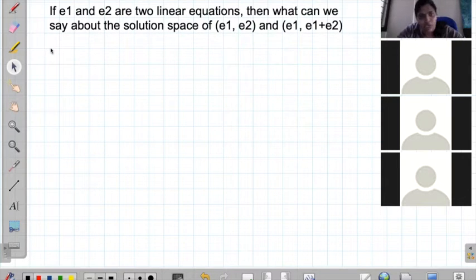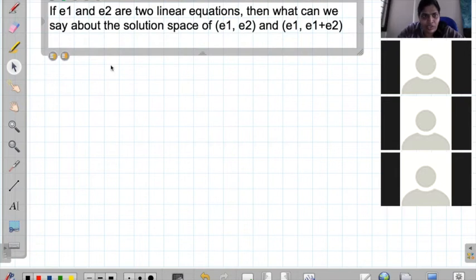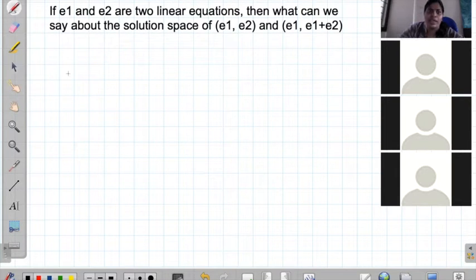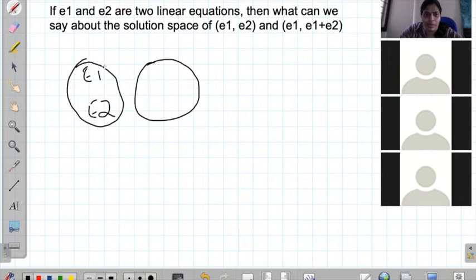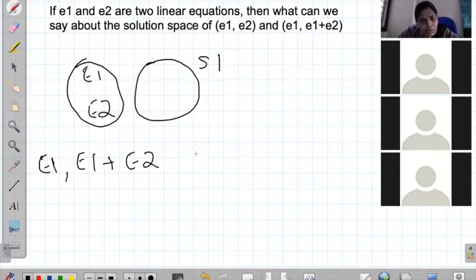So she's not here and we are going to continue looking at this question we were discussing last week. If e1 and e2 are two linear equations and this is a solution space for this system, then when we do e1 plus e2, like when we solve simultaneous equations we add them, right? So what can we say about the solution space of e1 comma e1 plus e2?